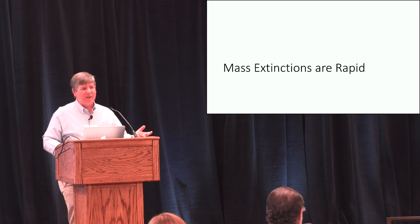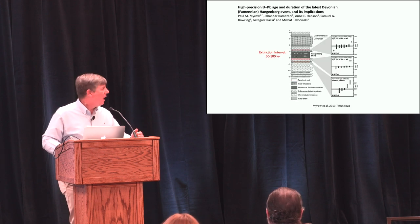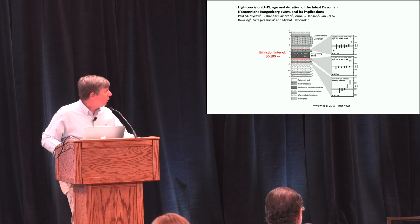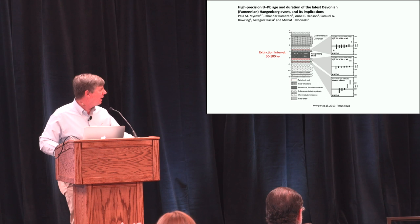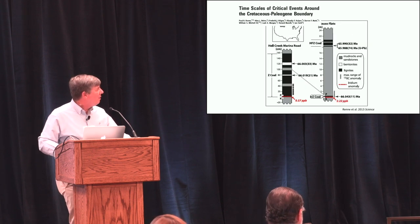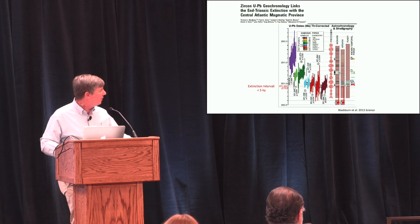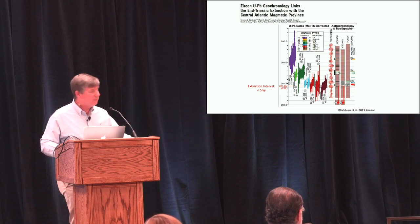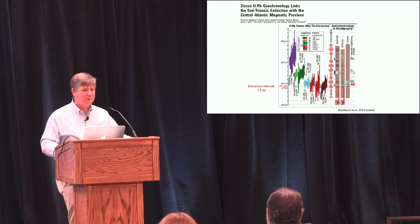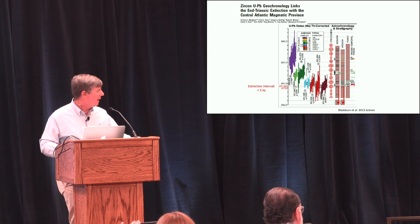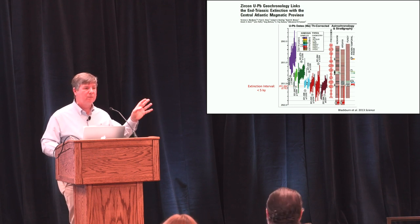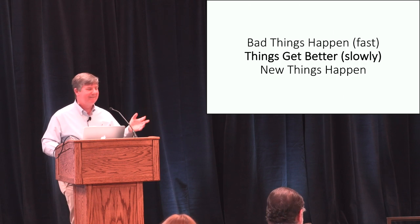This extinction being less than 30,000 years is actually true of every mass extinction event that we have data for — they're all fast. I think that's an important clue to what's driving it. For the Hangenberg event during the late Devonian, the extinction interval is on the order of 50,000 to 100,000 years. The K-Pg boundary with the impact and possible volcanism is certainly less than 20,000 years. The end-Triassic has been estimated at about 5,000 years — probably a little more than the data actually supports — but nonetheless, all of these events are fast.